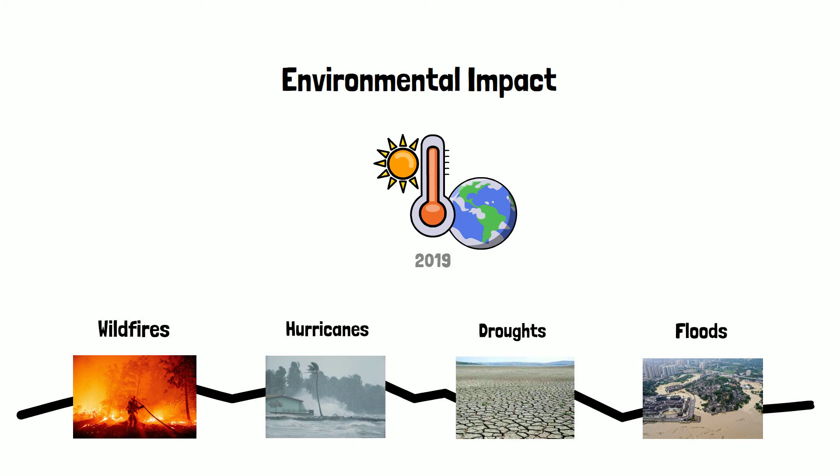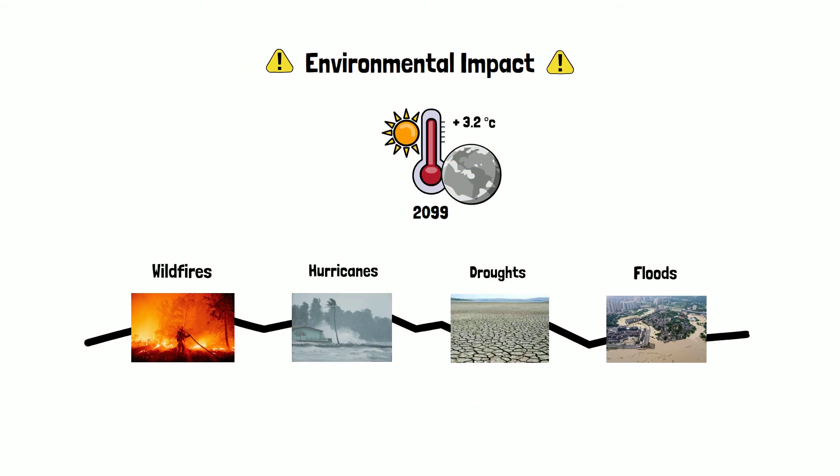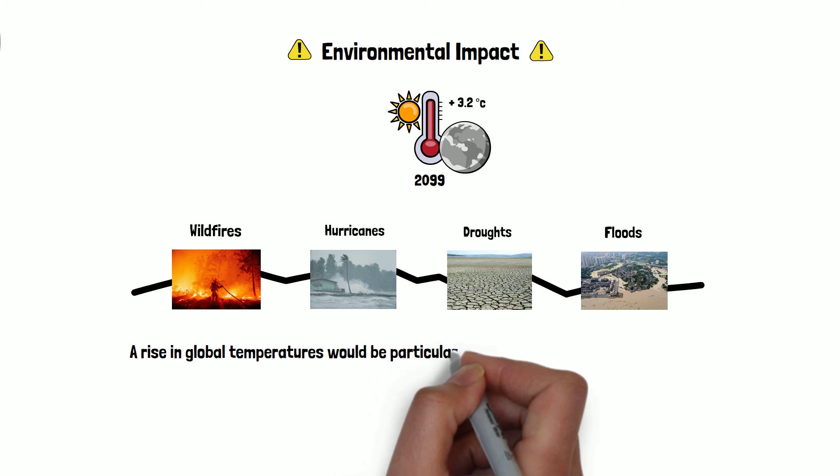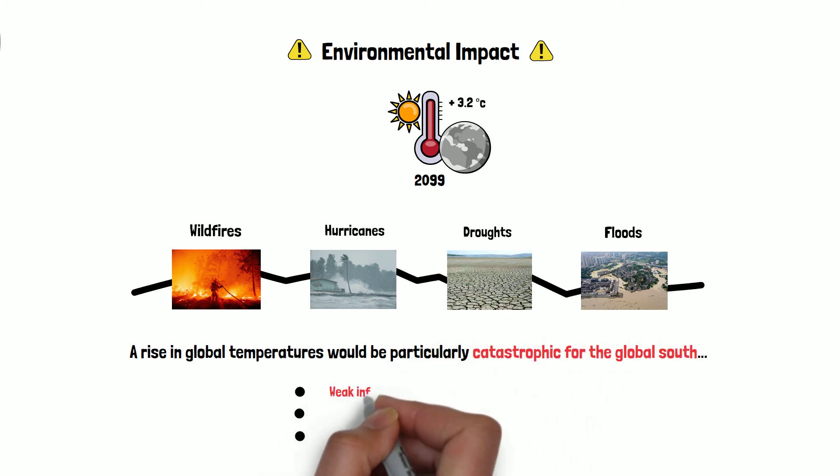Global temperatures are on track to rise as much as 3.2 degrees Celsius by the end of the century, which would have catastrophic effects on humanity at large, but particularly those in the global south. Many of these countries have weak infrastructure, such as poor roads and pavements, and are therefore more sensitive to adverse weather conditions.